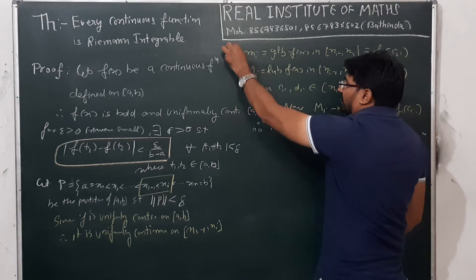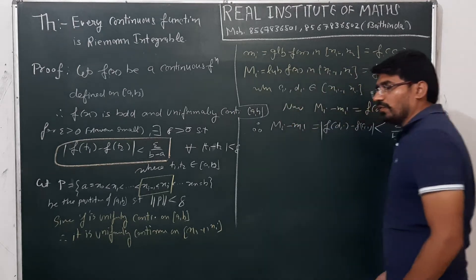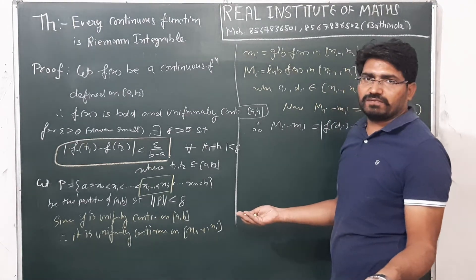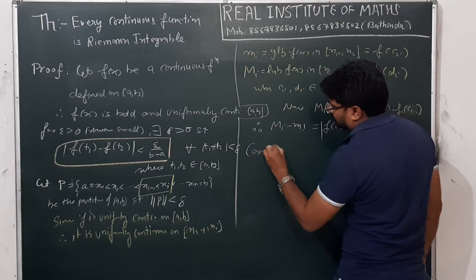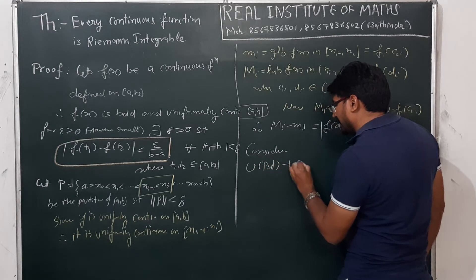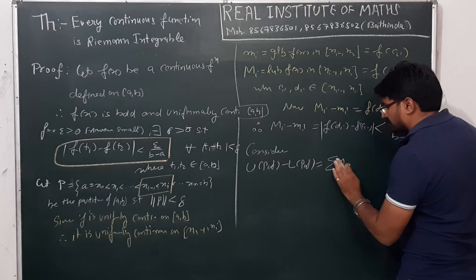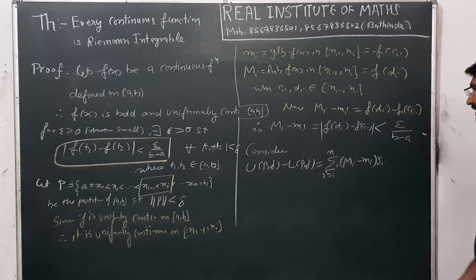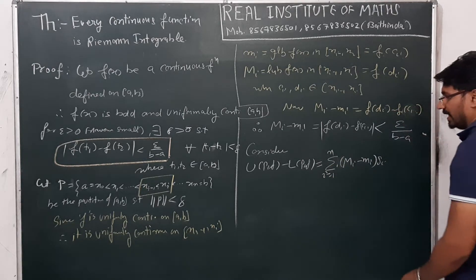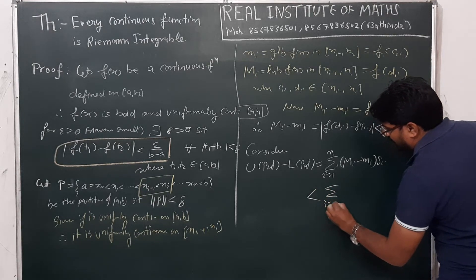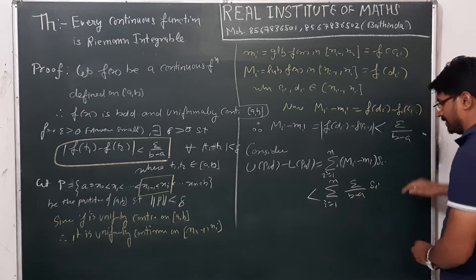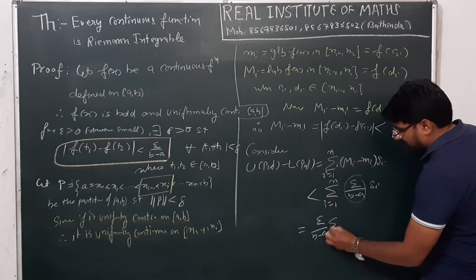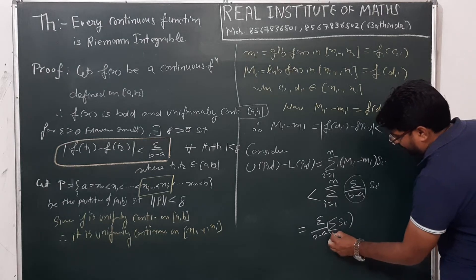Now, we have to prove that the function is Riemann integrable. So U(P, f) minus L(P, f) can be written as the summation of (M_i minus m_i) · Δx_i, for i running from 1 to n. This is less than summation of epsilon over (b - a) · Δx_i, for i from 1 to n. Since epsilon over (b - a) is independent of i, this equals epsilon over (b - a) times summation of Δx_i.